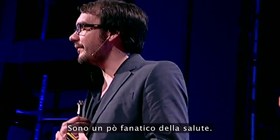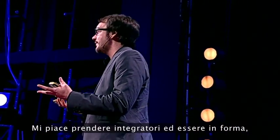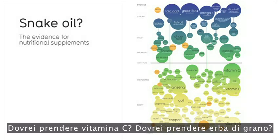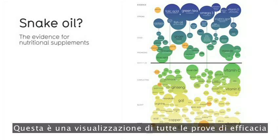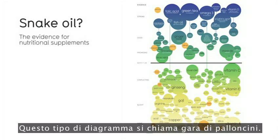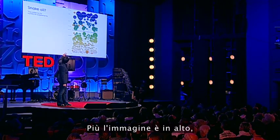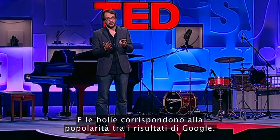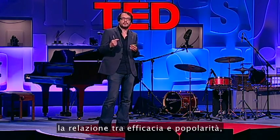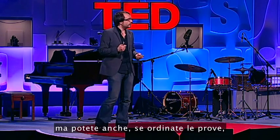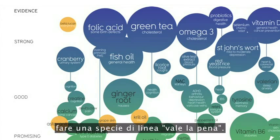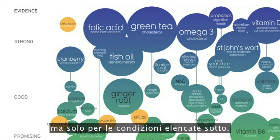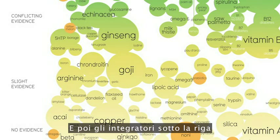I'm a bit of a health nut. I love taking supplements and being fit, but I can never understand what's going on in terms of evidence — there's always conflicting evidence. Should I take vitamin C? Should we take wheatgrass? So this is the visualization of all the evidence for nutritional supplements. This kind of diagram is called a balloon race. The higher up the image, the more evidence there is for each supplement. The bubbles correspond to popularity as regards to Google hits. So you can immediately apprehend the relationship between efficacy and popularity. And if you grade the evidence, you can sort of do a 'worth it' line — supplements above this line are worth investigating, but only for the conditions listed below.